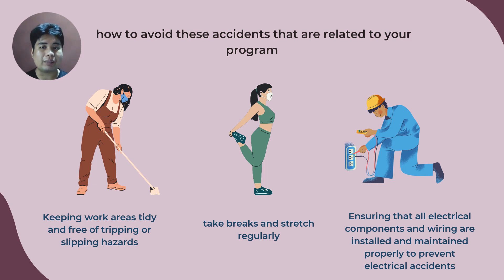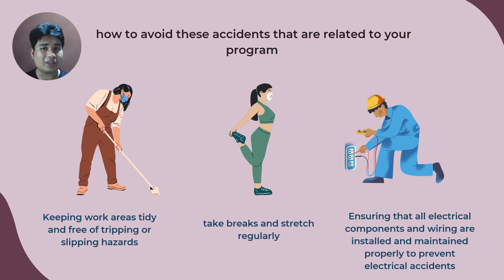To prevent eye strain and vision problems, it is crucial to take regular breaks from screen time, adjust the screen brightness and contrast, position the monitor at eye level, and practice the 20-20-20 rule — taking a 20-second break every 20 minutes and looking at something 20 feet away. Lastly, since computer engineering involves working with circuits and wires, we must ensure proper safety protocols to avoid problems, or call a professional to prevent electrical hazards. We may now proceed to our third agenda: unsafe acts and unsafe conditions in a working environment.